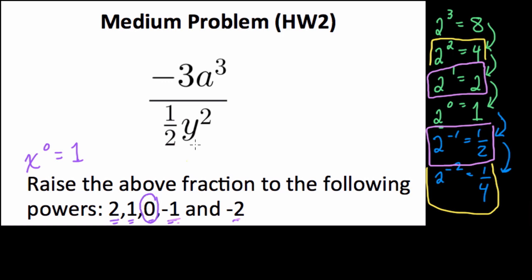This to the zero power equals one, assuming that a and y are not equal to zero. If a and y are not zero, this is certainly equal to one when the power is zero. For the first power, assuming this is not equal to zero, raising something to the first power means it is just itself. So this would equal negative three times a to the third over one-half y squared.